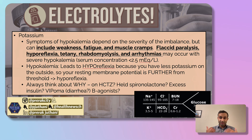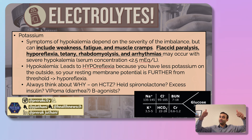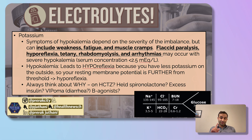Now let's talk about potassium. Potassium is a very important ion — it's primarily an intracellular ion, which means when cells lyse, your potassium can go up really fast and high. The reason it's intracellular is the sodium-potassium ATPase. Symptoms of low potassium can include weakness, flaccid paralysis, muscle cramps, hyporeflexia, tetany, and rhabdomyolysis.